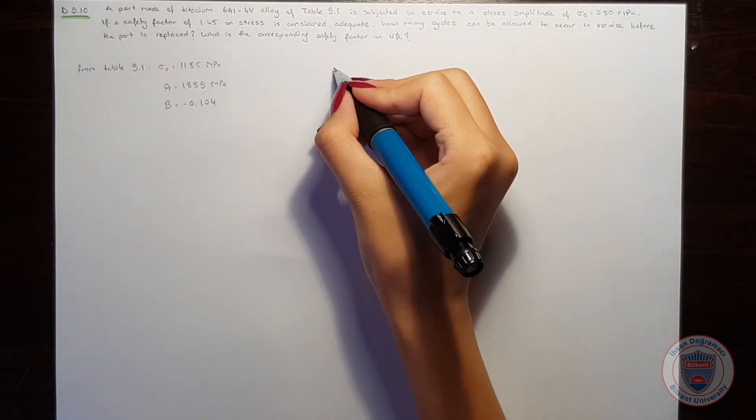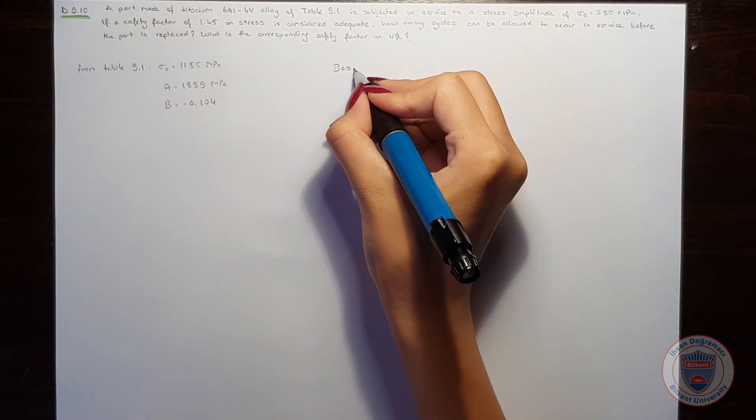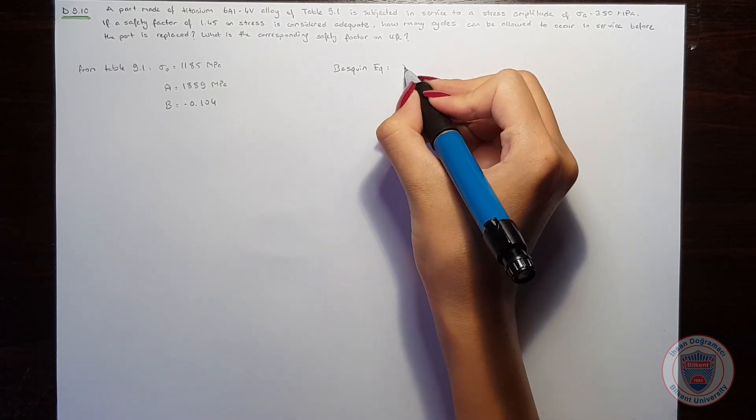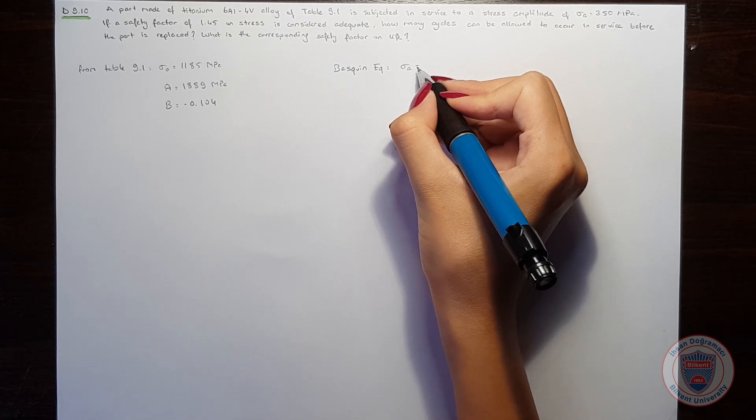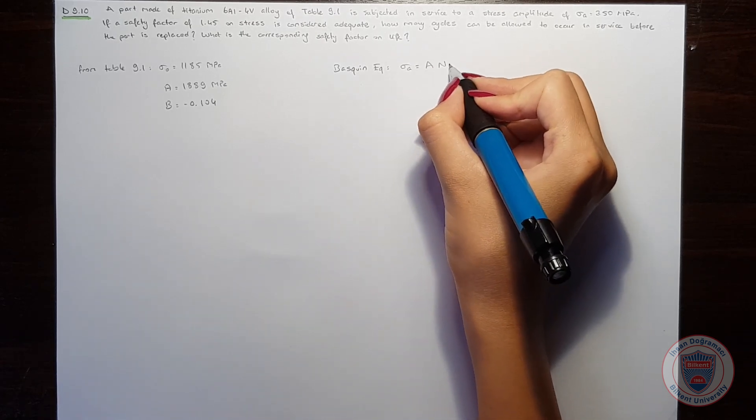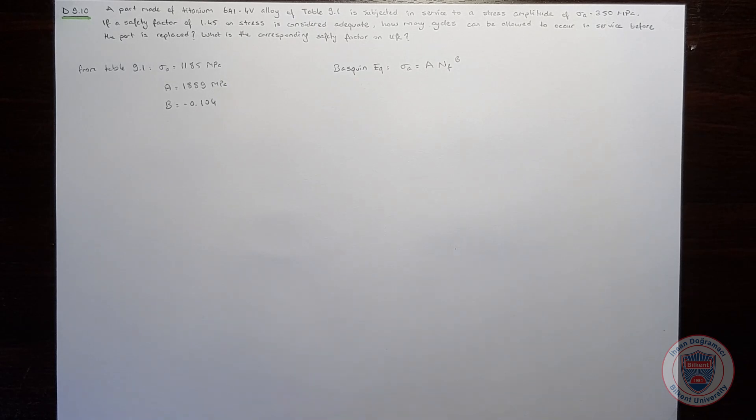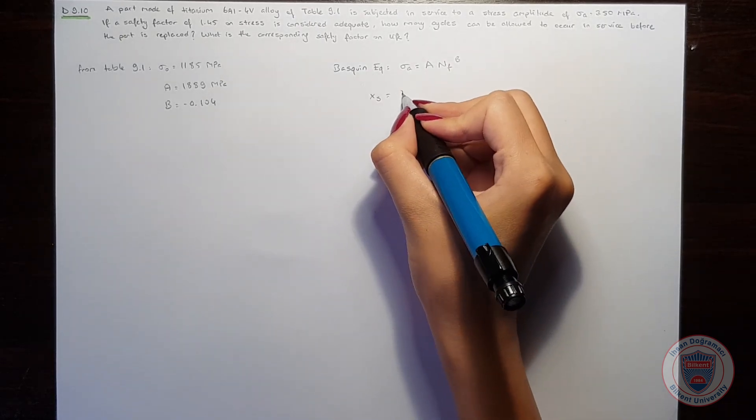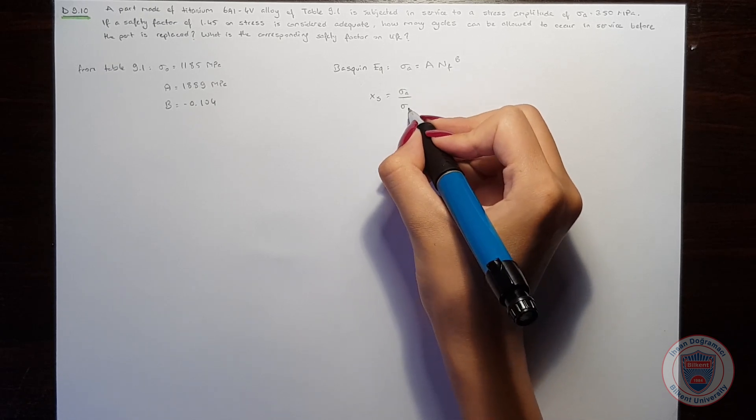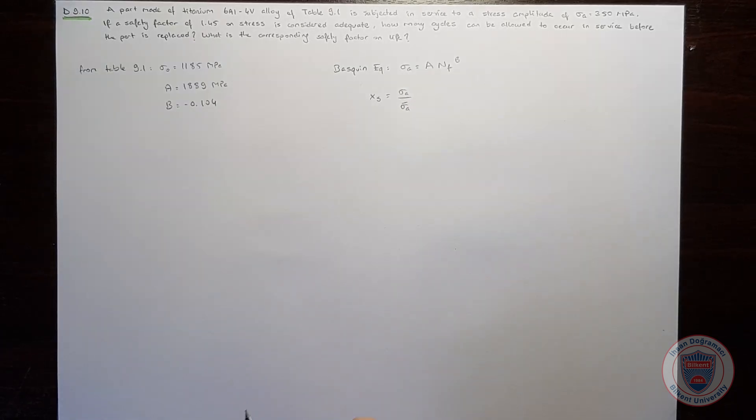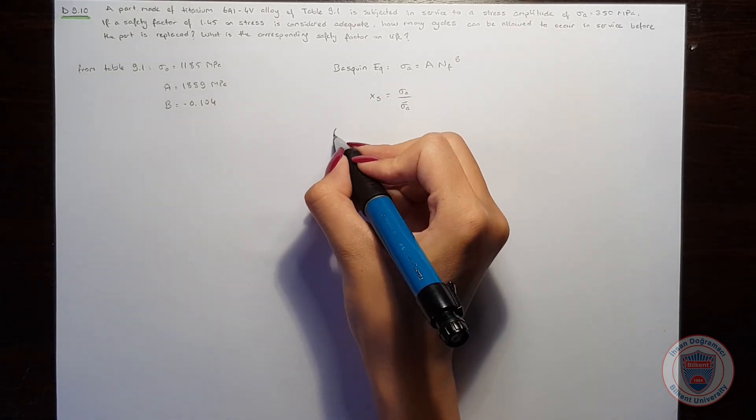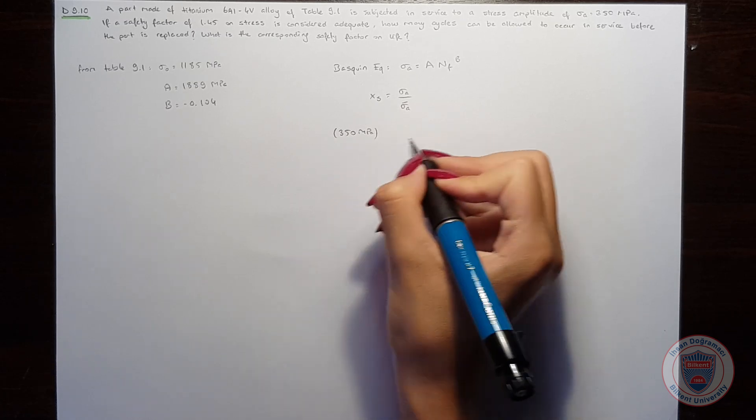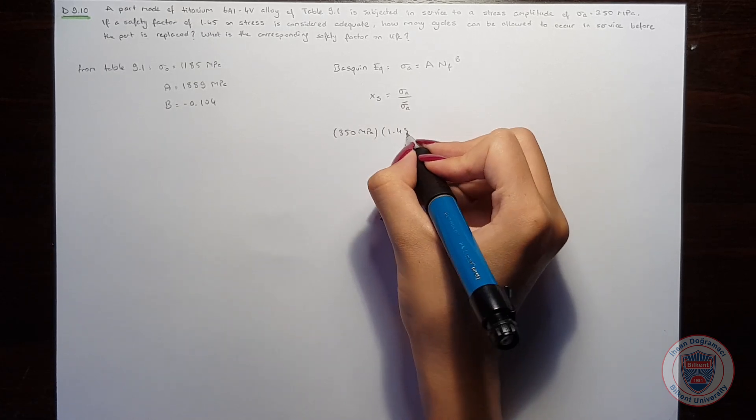To solve the question, we will use the Baskin equation, which tells us sigma a is equal to A times nf to the power of b. We also know that the safety factor on stress is equal to sigma a over sigma a bar, so we can write the stress amplitude times the safety factor, which is 1.45,